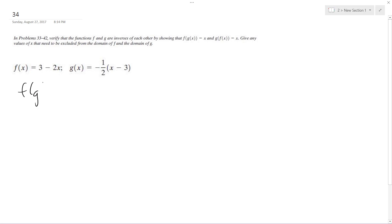So f of g of x is going to be equal to 3 minus 2, and where x is in f of x, I'm going to plug in g of x, so I get negative 1 half x minus 3. 3 minus...